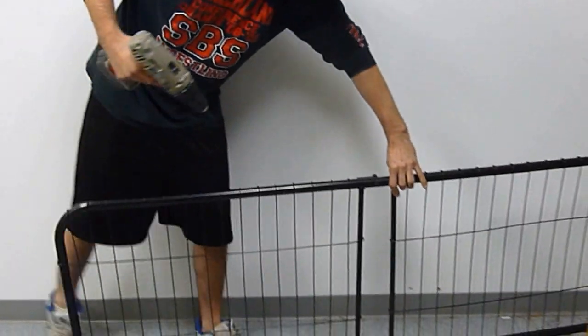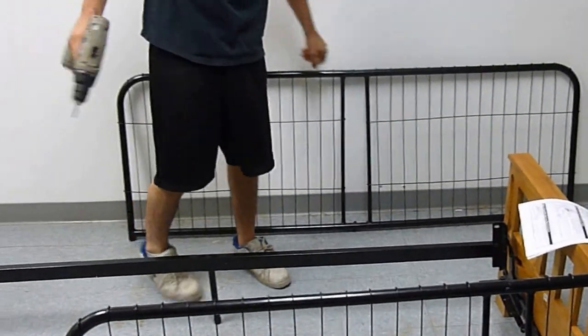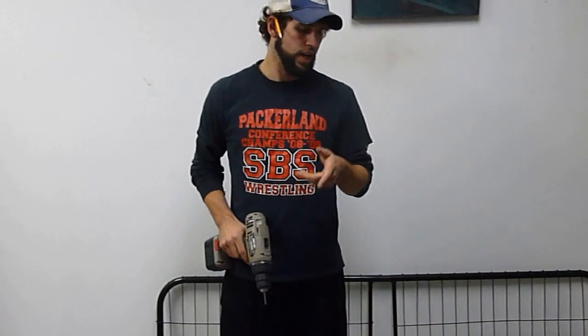All right, now that concludes the assembly of the back and the seat and also the main frame of your futon. In the next video, we're going to show you how to attach the back and the seat to the hinges.